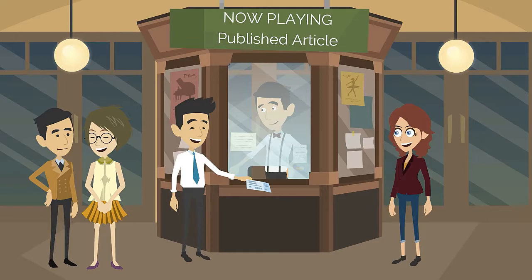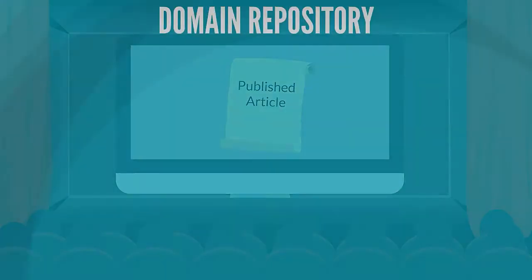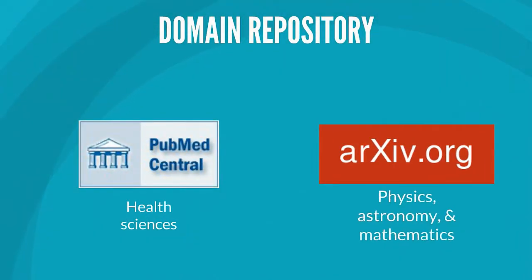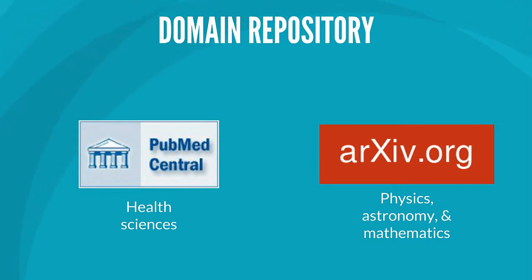Anyone can search, view, and download items deposited in an open access repository. Some repositories accept publications from specific subject areas, such as PubMed Central for the Health Sciences and arXiv for Physics, Astronomy, and Mathematics. This type of repository is called a domain repository.